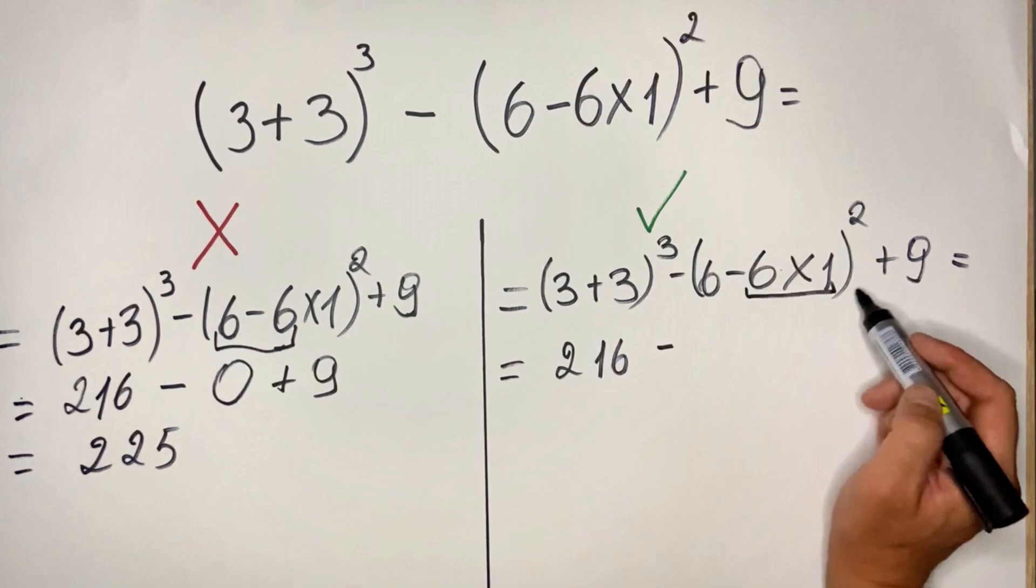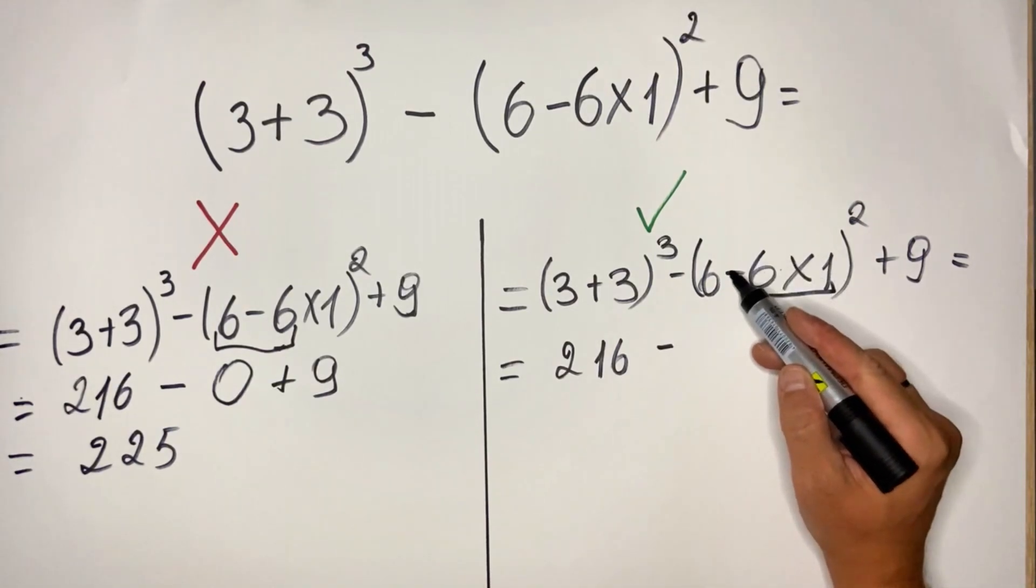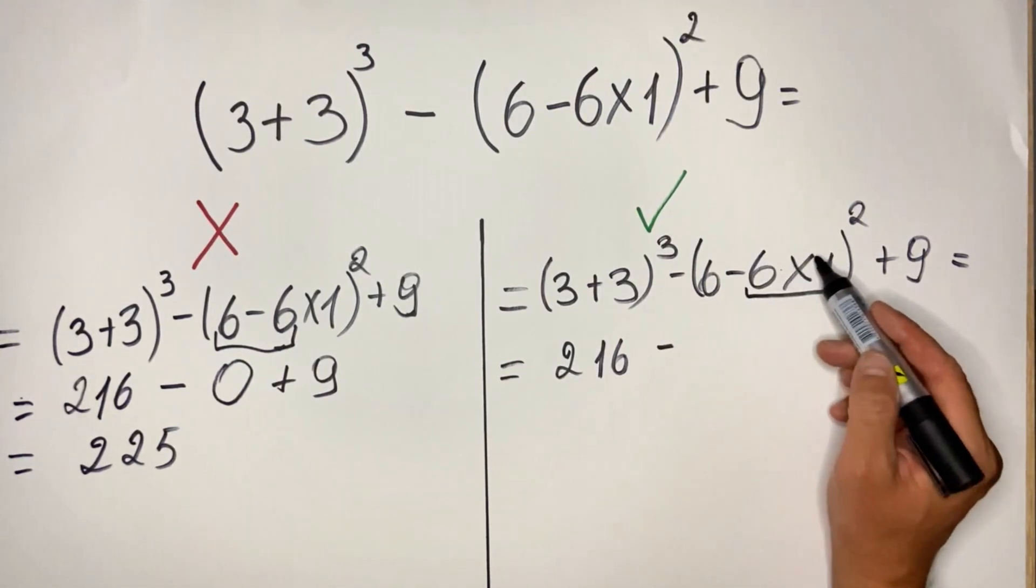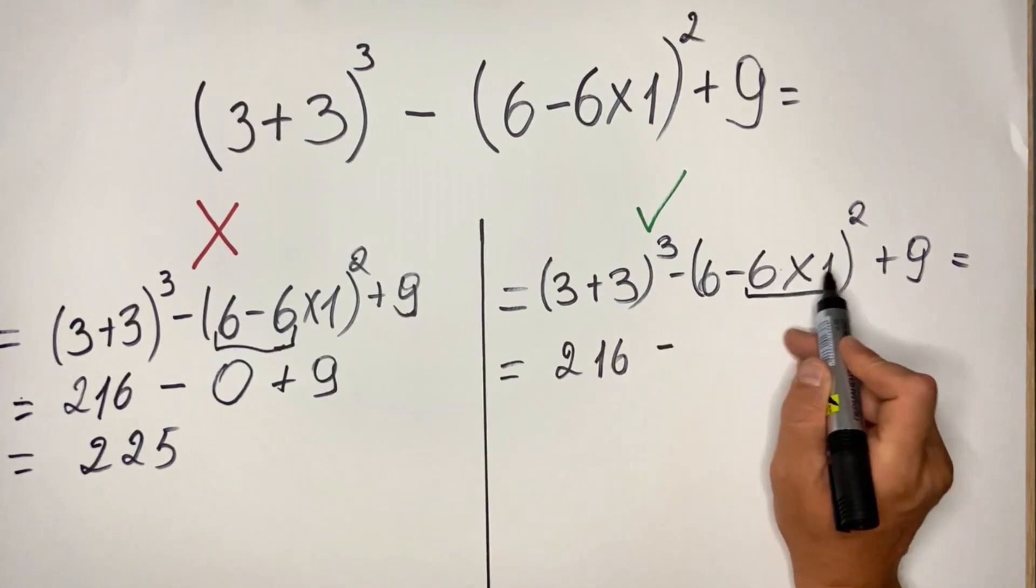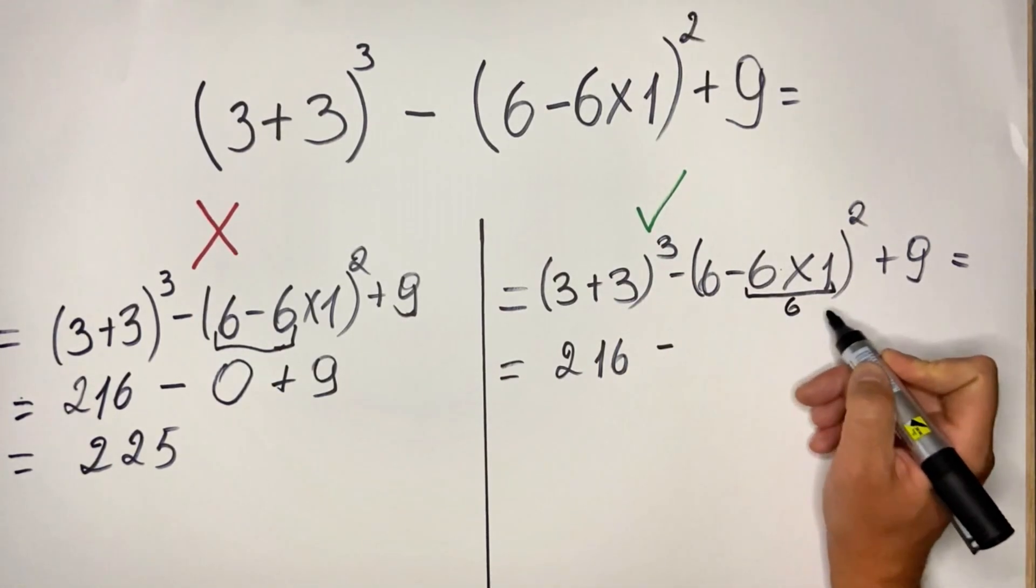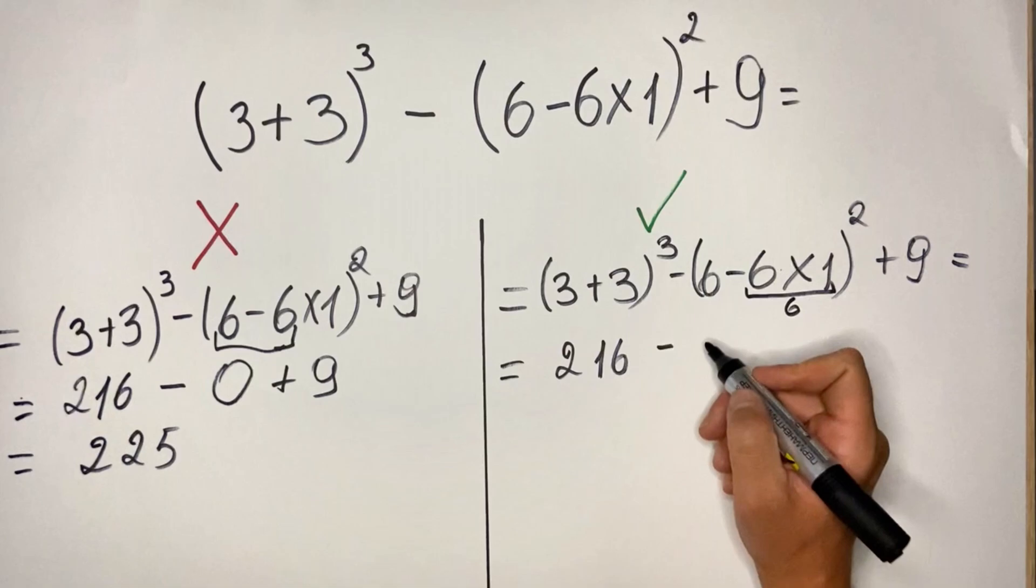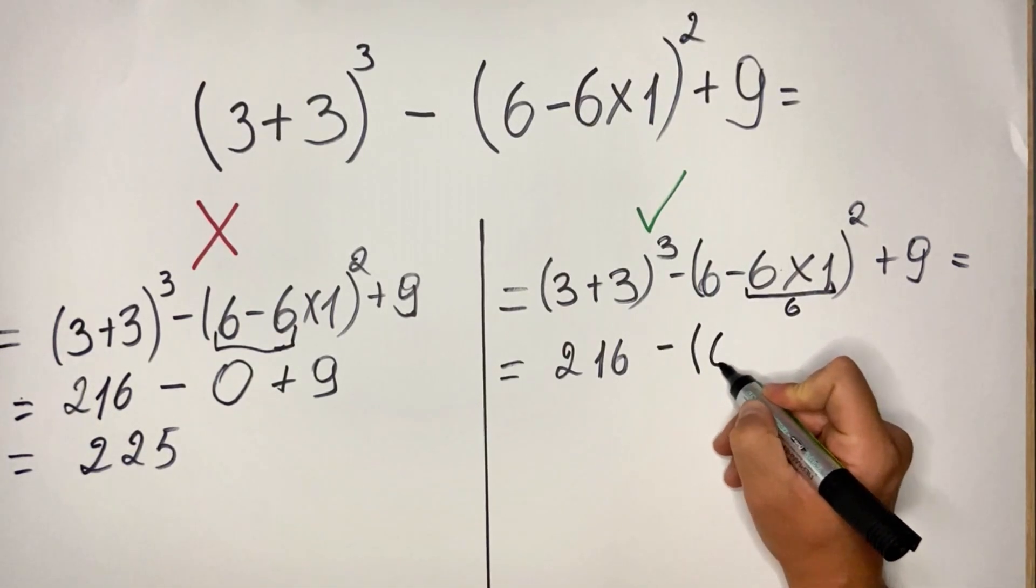So in parenthesis we have a subtraction and multiplication, so multiplication comes first. So we have 6 multiplied by 1, which is 6. So we have, let's put it like this, 6 minus 6 squared plus 9.